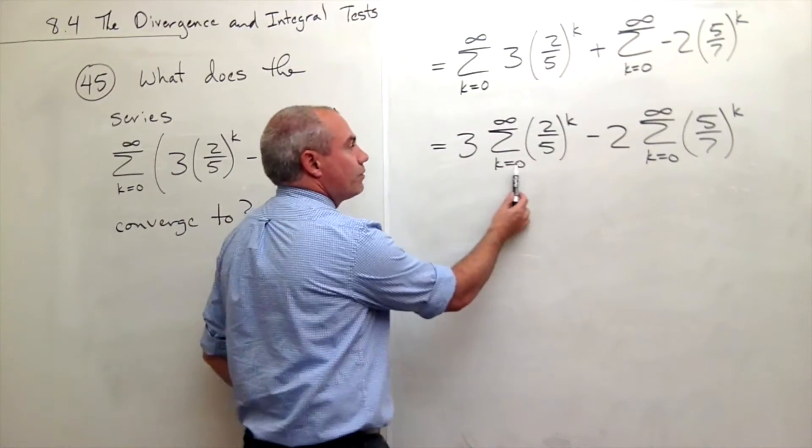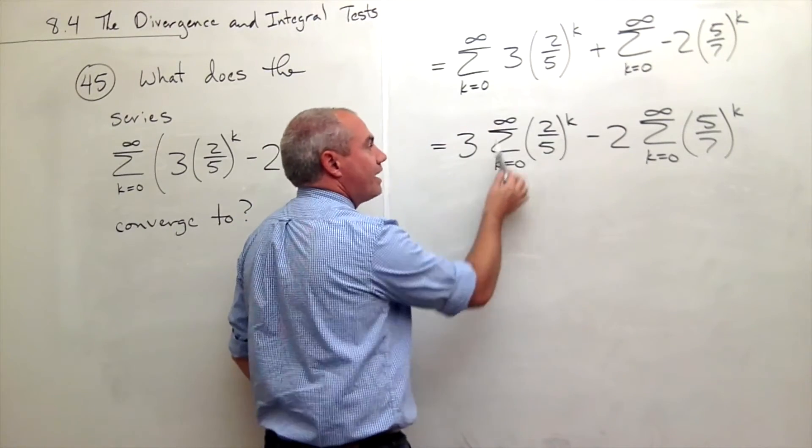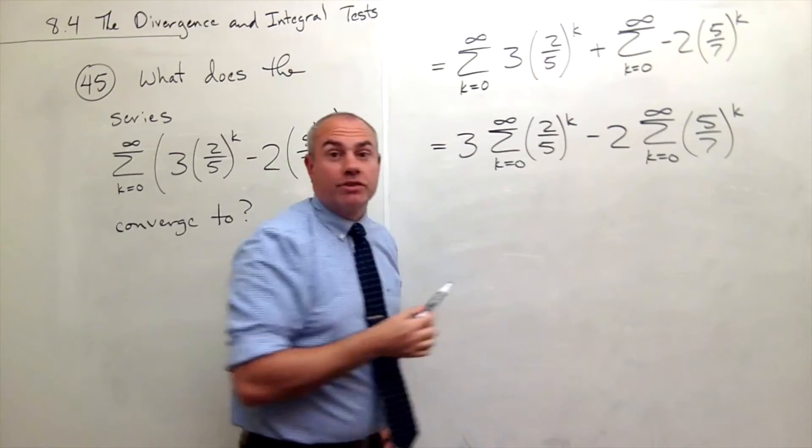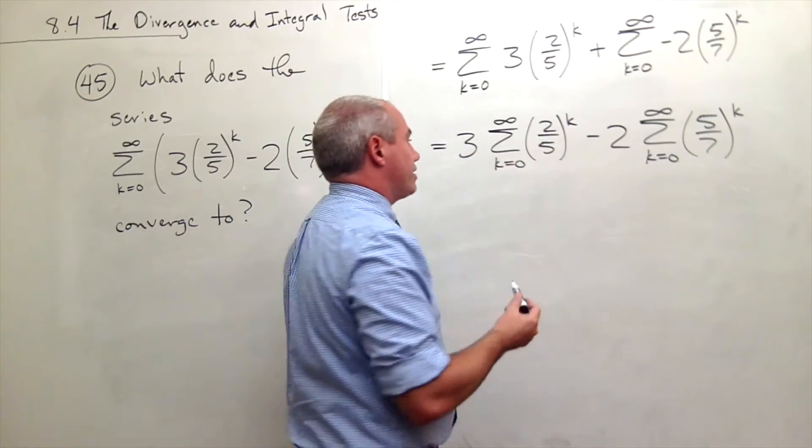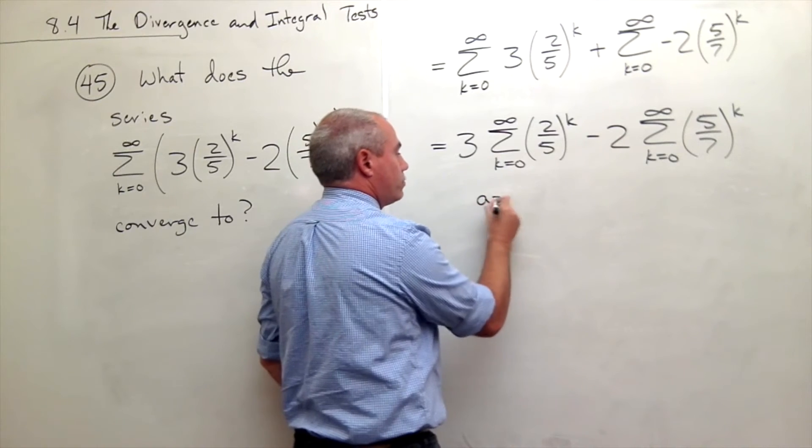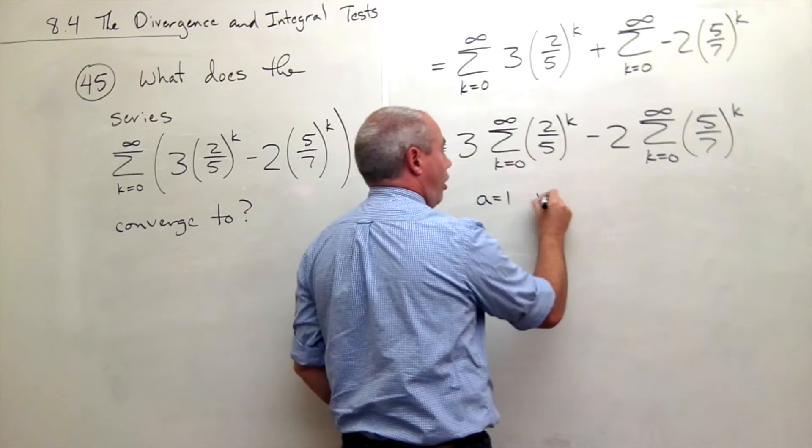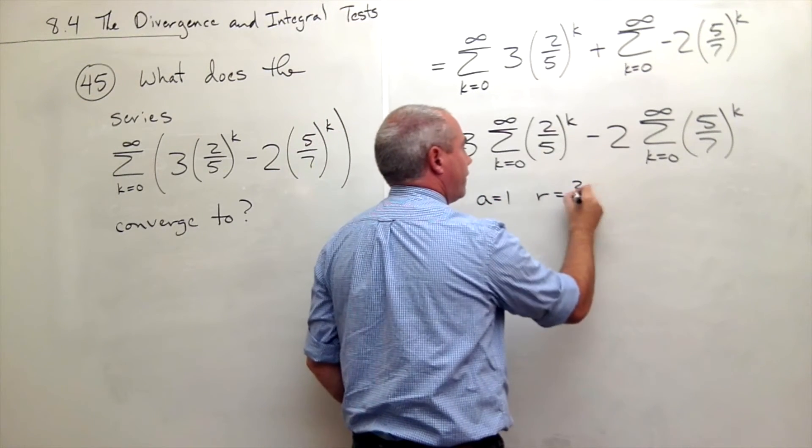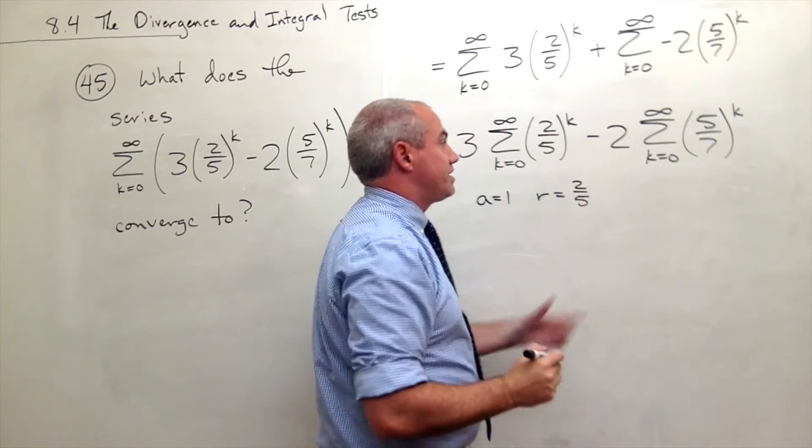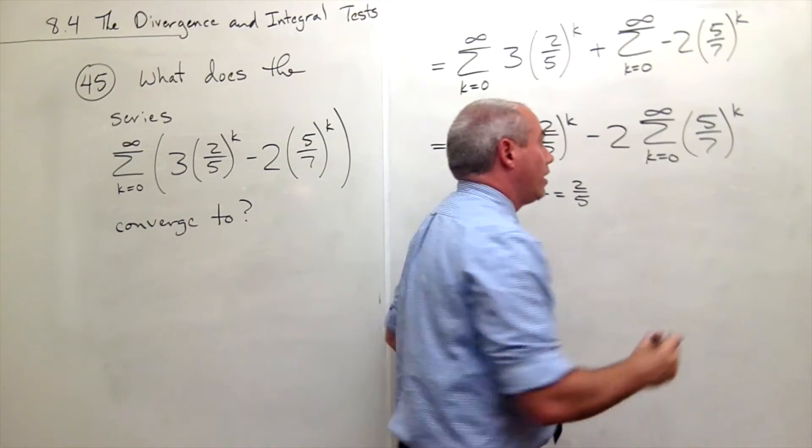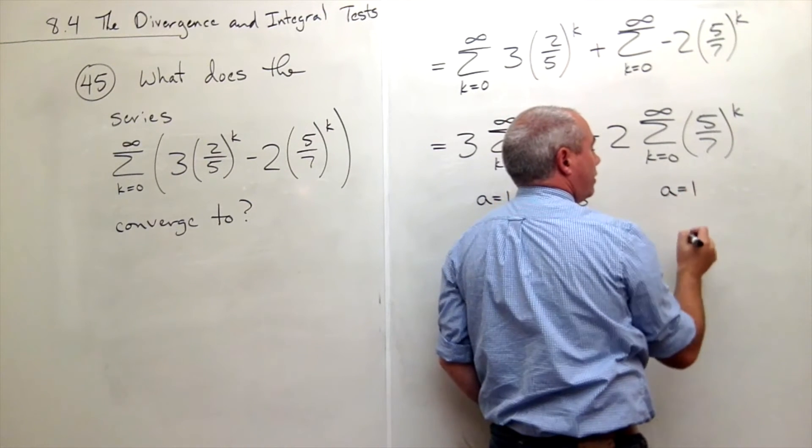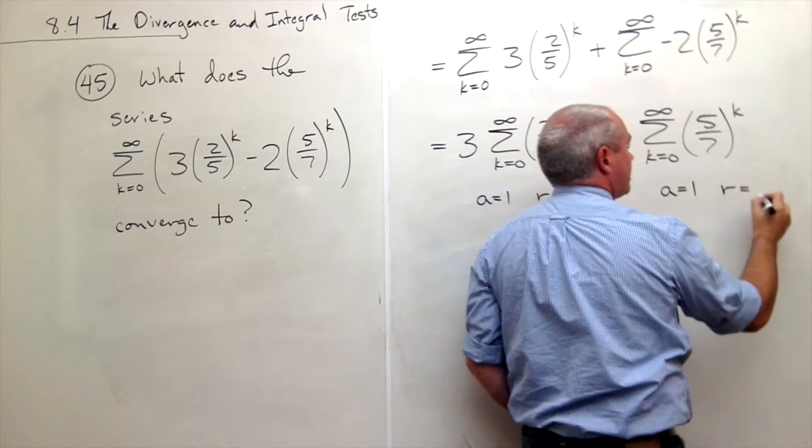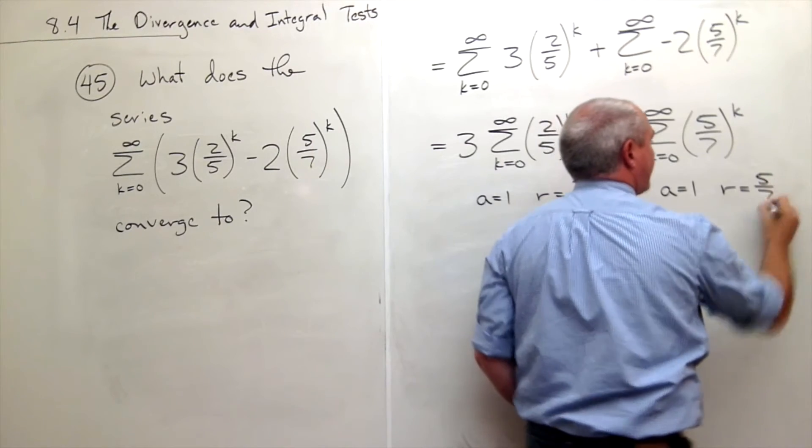If I plugged in k equals zero, I get one, and then every term after that I multiply by an additional two-fifths. So this is a geometric series with a equals one, and r is equal to two-fifths. Similar over here, I have a geometric series with a is equal to one, and r is equal to five-sevenths.